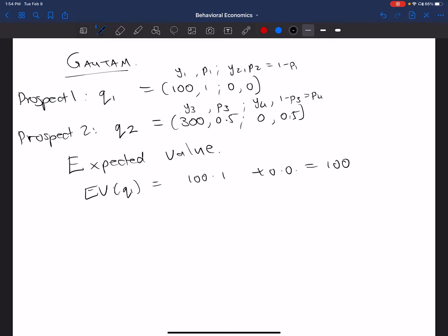In the other case, we've got the expected value of Q2, that's equal to 300 times 0.5 plus 0 times 0.5, and that's equal to 150. So if we're purely in the world of maximizing the expected value, the actual money prospects that we could get here, then someone is going to pick this. 150 is greater than 100.